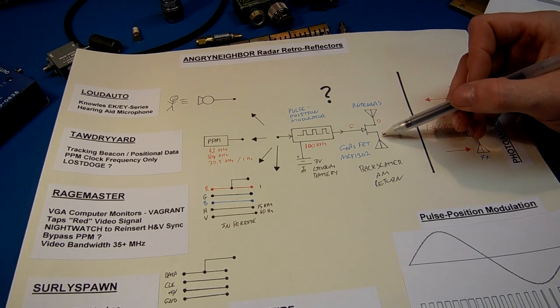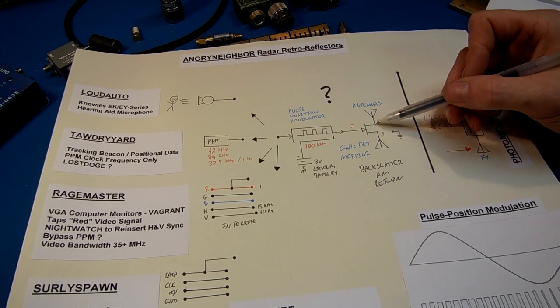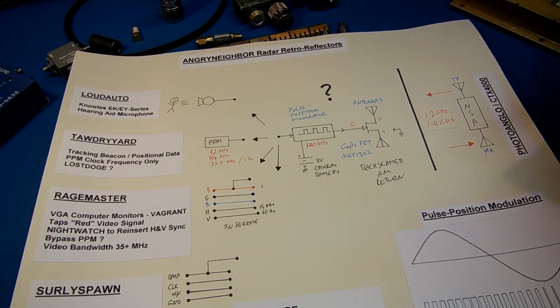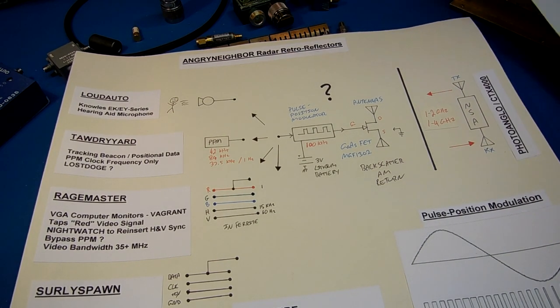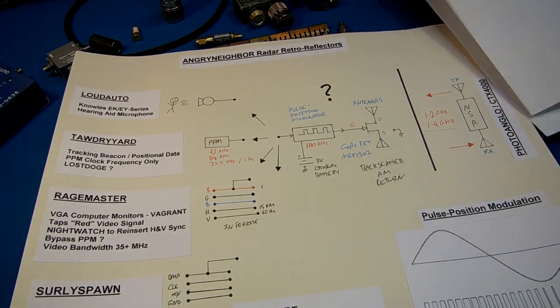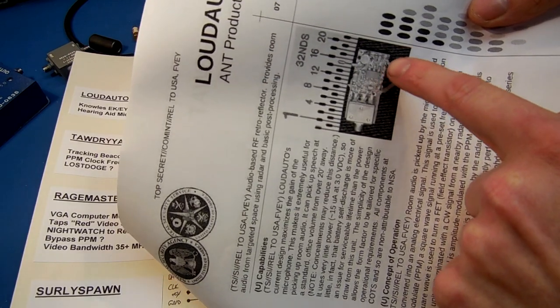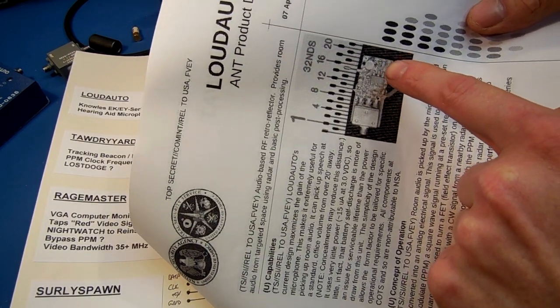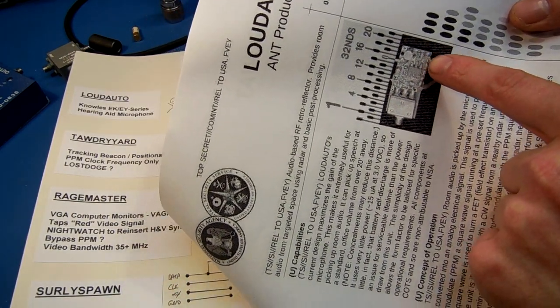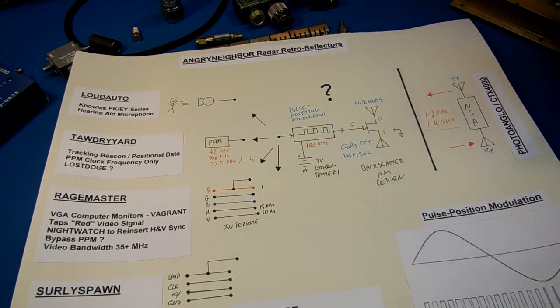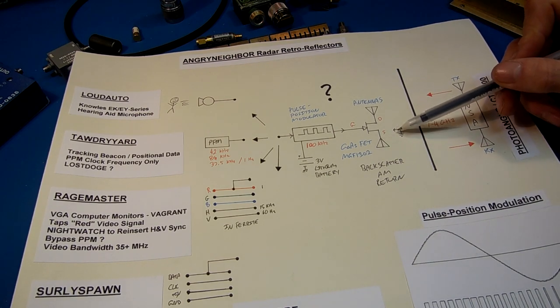I believe the gate and the source are just antennas, which could just be pieces of wire. You'll see the FET on the Loud Auto photo. There's not even really an antenna because you're just tuning the illumination carrier frequency to whatever happens to give you a good return.